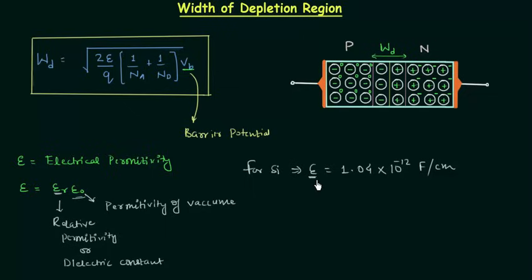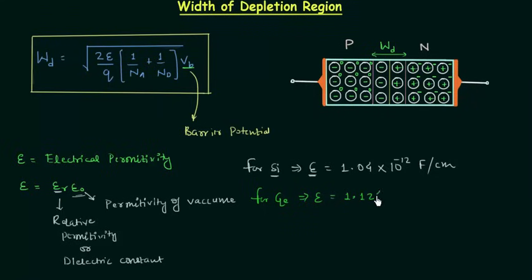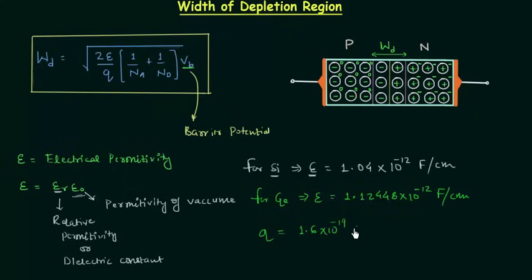For germanium semiconductor, the permittivity is equal to 1.12448 × 10^-12 Farad per centimeter. This information will be given in the problem, so you don't have to worry about it — just use it directly in the formula. Q is the charge of one electron and it is equal to 1.6 × 10^-19 coulomb. Na is acceptor concentration and Nd is donor concentration.